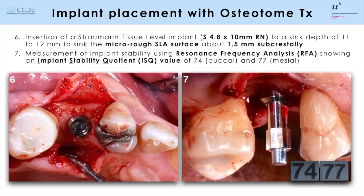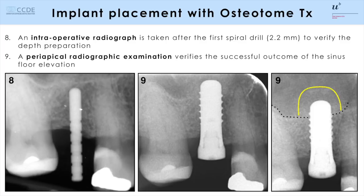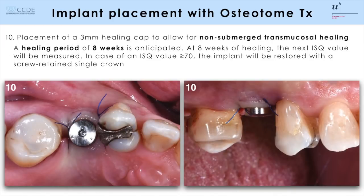The ISQ value was 74 and 77, indicating very good stability for the patient. Here you see the periapical radiograph obtained during surgery to control the sink depth and following surgery to document the applied bone fillers with the osteotome technique. The surgery is completed with the application of a 3 millimeter healing cap to allow for a transmucosal non-submerged healing. For financial reasons, a provisional restoration has not been applied. We are anticipating a healing period of 8 weeks to go then directly for the final restoration with an implant-borne single crown.